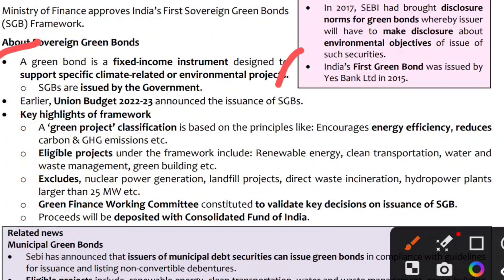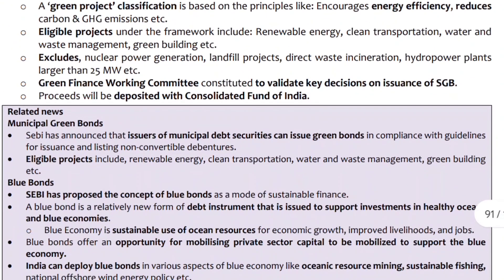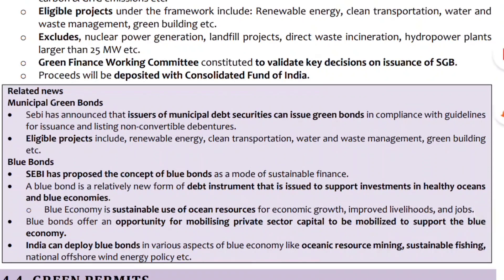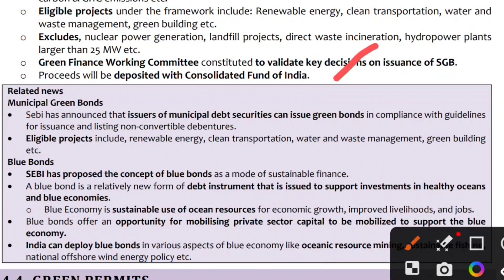The eligible projects under this framework are: renewable energy, clean transportation, water and waste management, and green buildings. Exclusions include nuclear power generation, landfill projects, direct waste incineration, and hydropower plants larger than 25 MW. This exclusion is under the Green Finance Working Committee. The Consolidated Fund of India is involved.